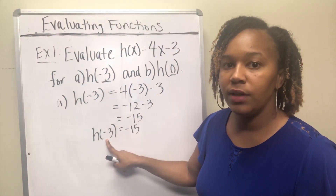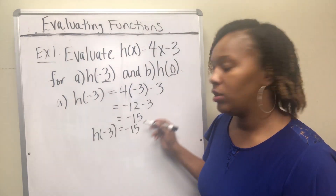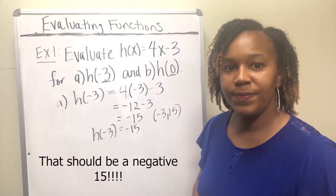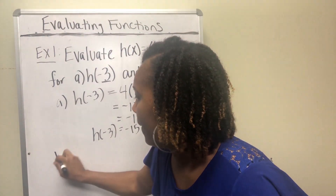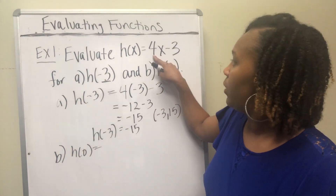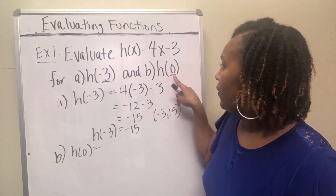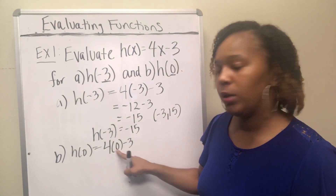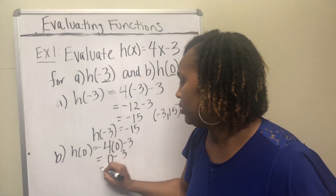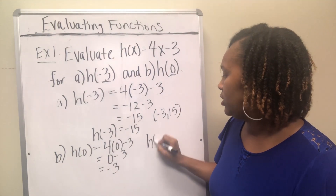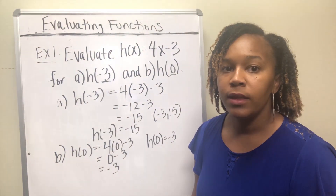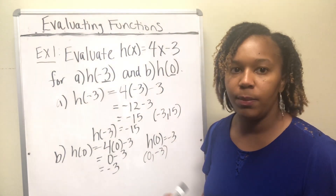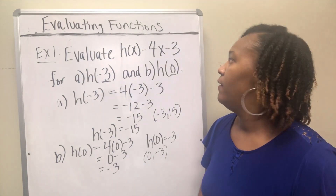The input variable x was negative 3, and the output variable y was negative 15, so the ordered pair (negative 3, negative 15) is part of this function. For part B, evaluate h of 0 — wherever there was an x, replace it with 0. That gives 4 times 0 minus 3. 4 times 0 is 0, and 0 minus 3 is negative 3. So h of 0 equals negative 3, meaning the ordered pair (0, negative 3) is part of this function.